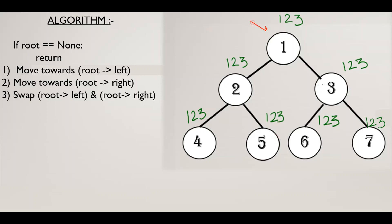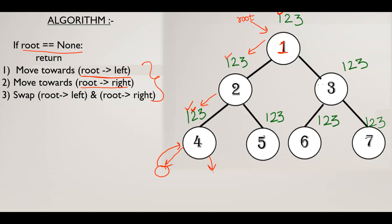We will start with root. We have taken the one node as root, for which we need to follow these three steps, working in a sequential way. On the one node, we follow the first step: go to root.left. We will go to the left direction and reach the two node, where the first step is again to go to root.left. Then on the four node, the first step is to go to root.left. Now we don't have root.left — root is equal to none — so it will return. Then we follow the second step, root.right. Again we have none, so it returns. Then on the third step, it swaps these two — since we don't have anything here, it will work fine.